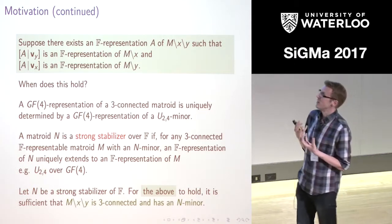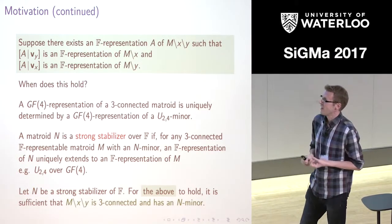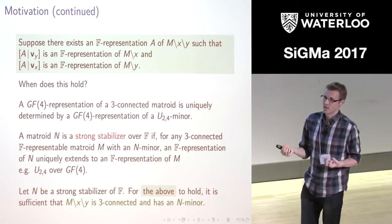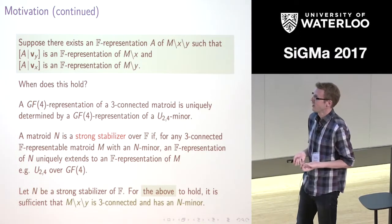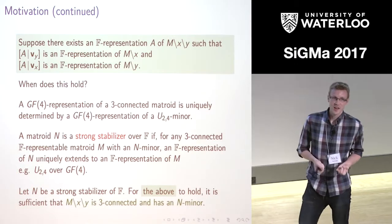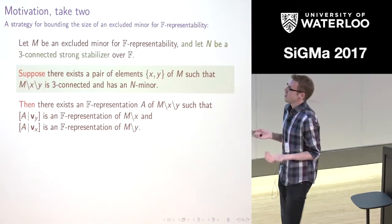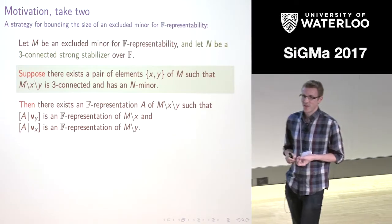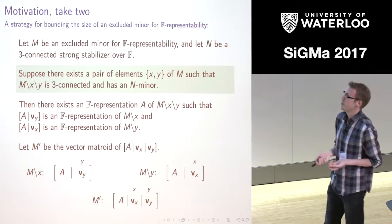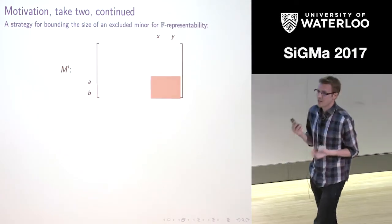To get these nice overlaying representations, it's sufficient that we are able to find a pair of elements X and Y such that we're three-connected and have an N minor — in this case, when we delete X and Y, we've got this strong stabilizer, so it's uniquely going to extend to a representation of M delete X or M delete Y. This should sound familiar: deleting two elements, keeping three-connectivity and an N minor. Up to duality, we're looking for a pair where we can either delete them or contract them.